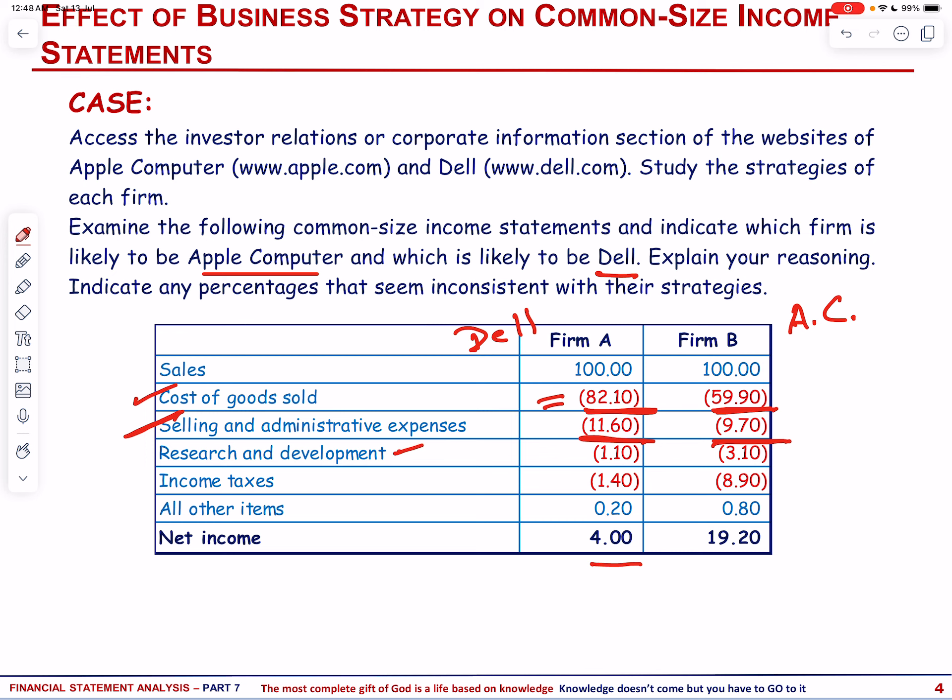Turning to research and development expense to sales percentage, this metric reflects the proportion of a company's revenue allocated towards research and development activities. Apple is renowned for its continuous innovation in consumer electronics, software, and services, which necessitates significant investment in research and development. The company allocates a substantial portion of its revenue towards R&D activities aimed at developing new technologies and enhancing existing products. Apple's flagship products such as iPhones, iPads, Mac computers, and wearables like the Apple Watch are known for their groundbreaking features and functionalities.